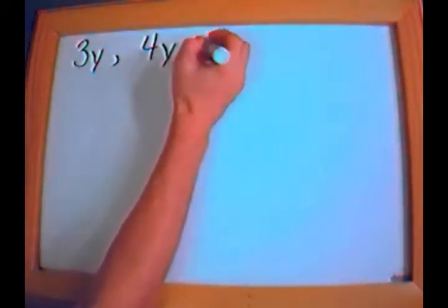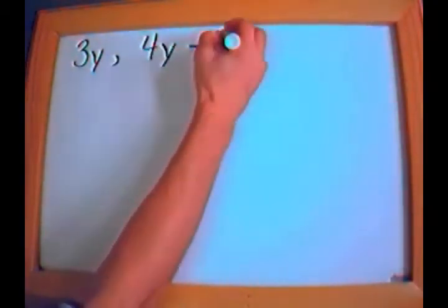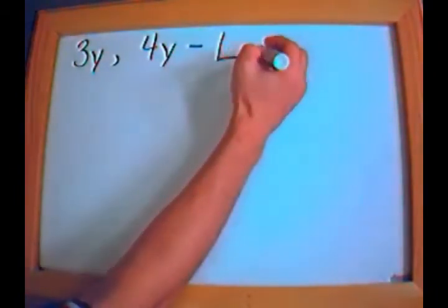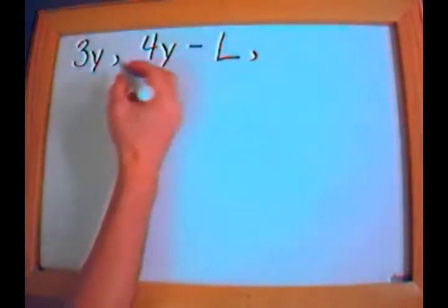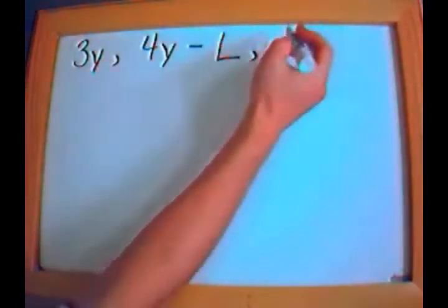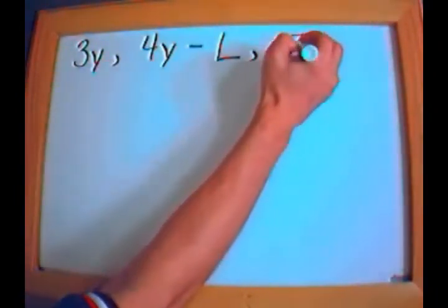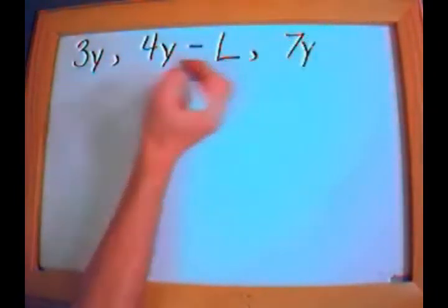So for this, these two are like terms. And because they're like terms, I can simply add them. The sum of these two is simply 7y — all I do is add the two coefficients.